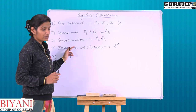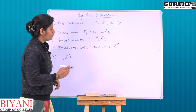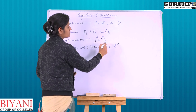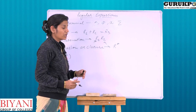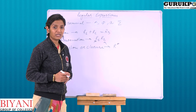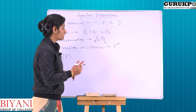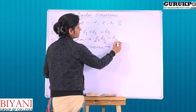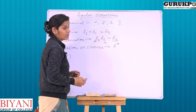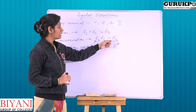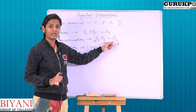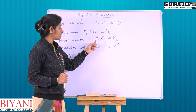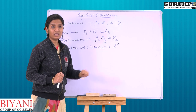Next is concatenation. If R1 individually is regular and R2 individually is regular, and if we concatenate them, then the resultant expression R3 is also regular. So union is also regular, and concatenation is also regular.